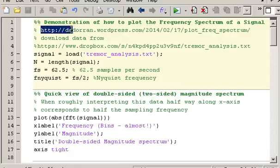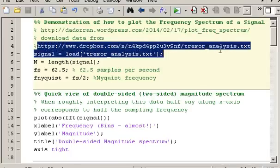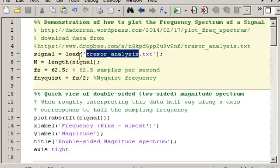So here's a link to the code and I've also included a link to the time domain data that I'm using in this demonstration. This data is taken from a patient who has a neurological tremor.